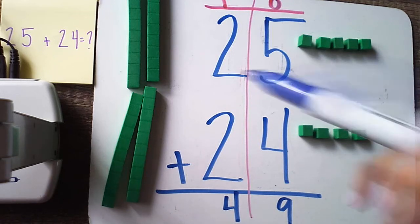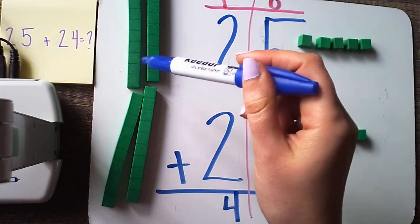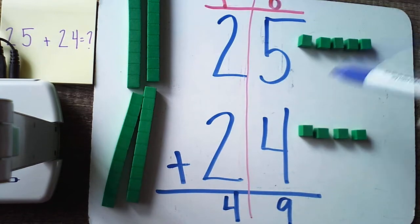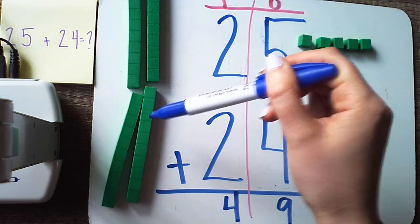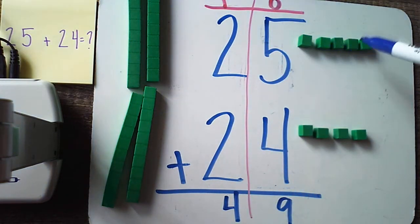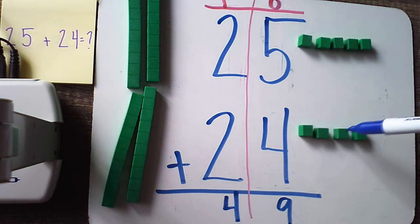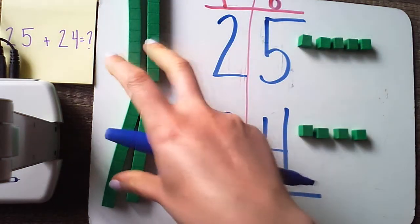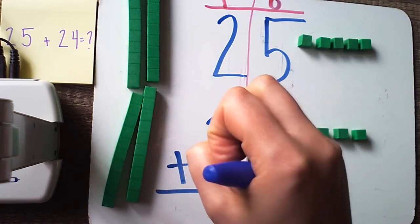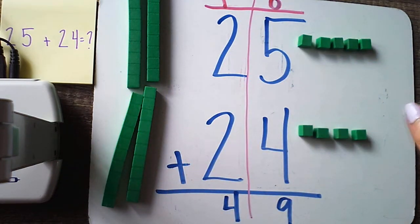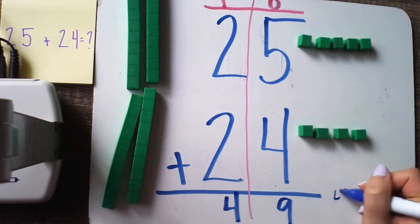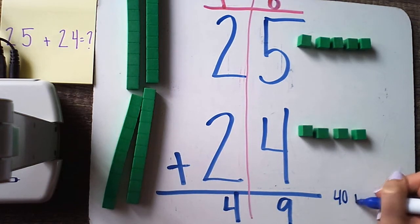Another way that friends might do it is by counting all your groups of ten and then your leftover ones: ten, twenty, thirty, forty, forty-one, forty-two, forty-three, forty-four, forty-five, forty-six, forty-seven, forty-eight, forty-nine. Or other friends might look at this and say you've got forty over here and nine over on your ones side — just add forty plus nine, which is also forty-nine.